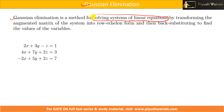We have discussed how to solve homogeneous and non-homogeneous linear equations. Here in the Gaussian elimination method, we can solve these equations by transforming the augmented matrix of a system into row echelon form.